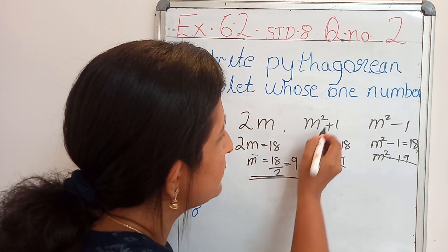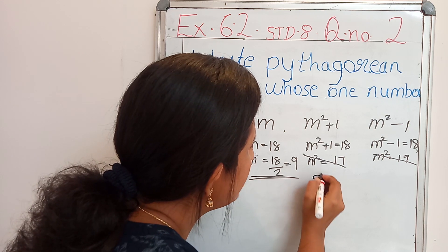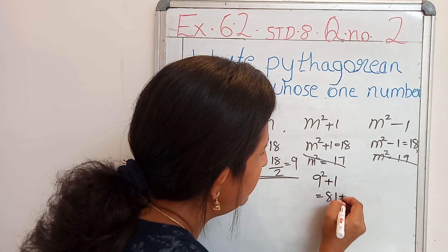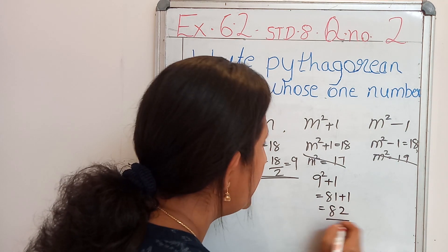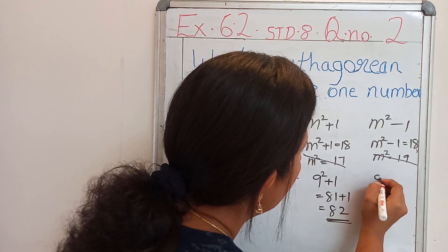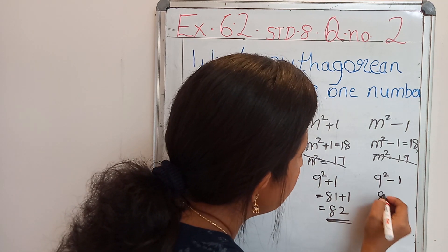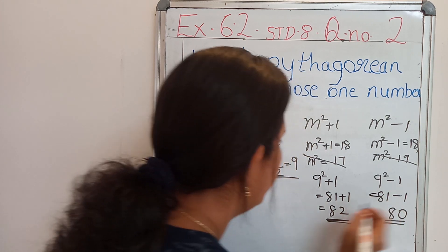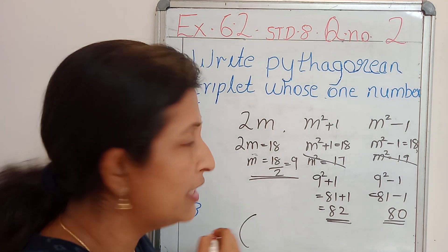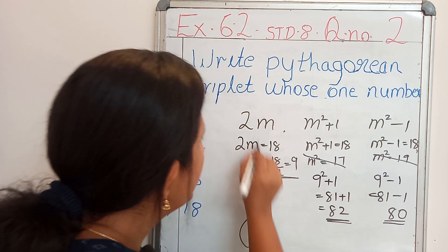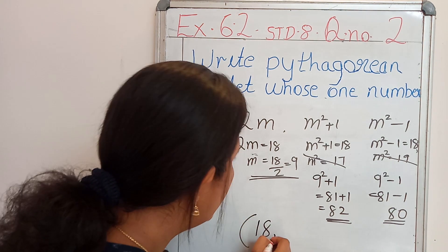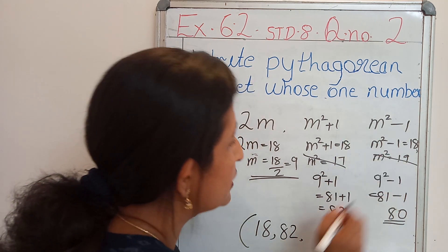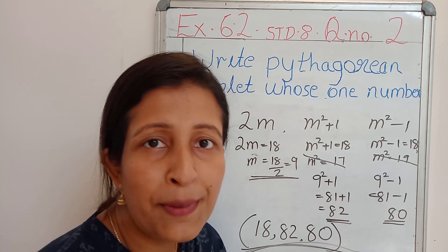Then m square plus 1: substitute the value of m, that is 9 square plus 1 equals 81 plus 1 equals 82. Then 9 square minus 1, that is 81 minus 1 equals 80. So we got all 3 Pythagorean triplets. Write the value of 2m — that is 18 — m square plus 1 that is 82, and m square minus 1 that is 80.